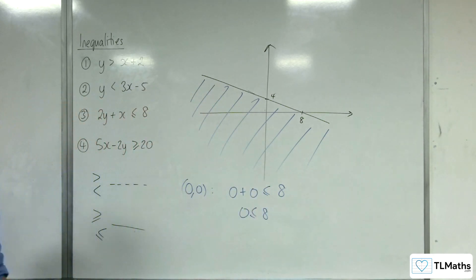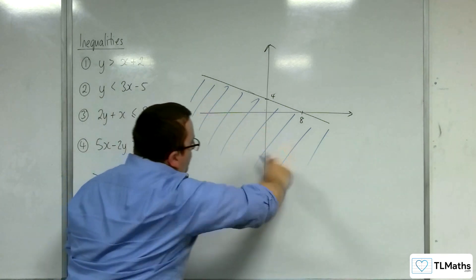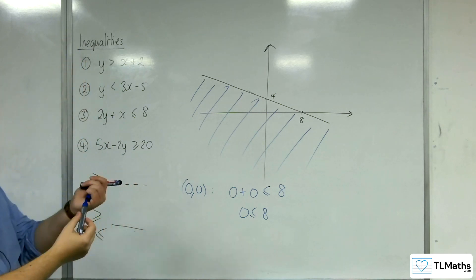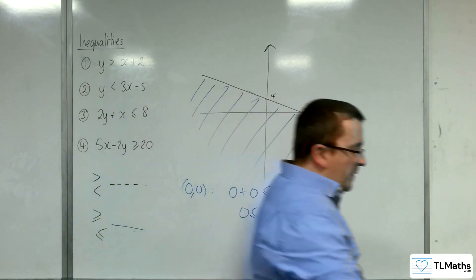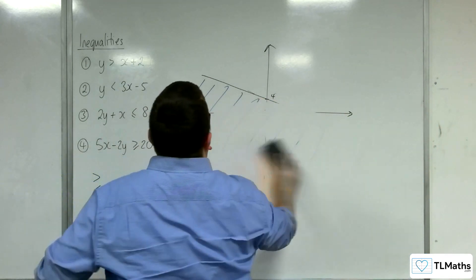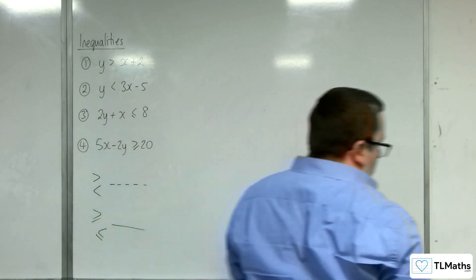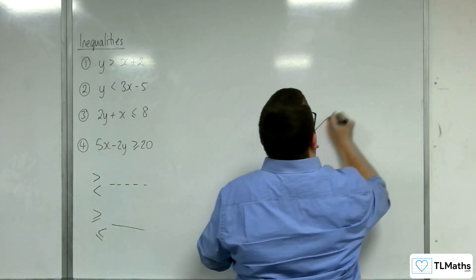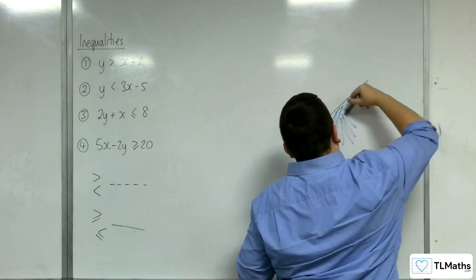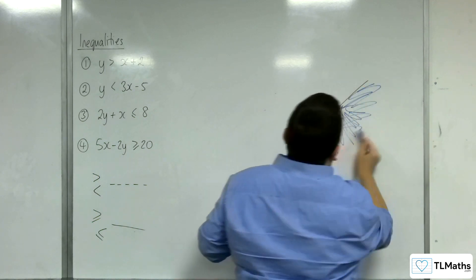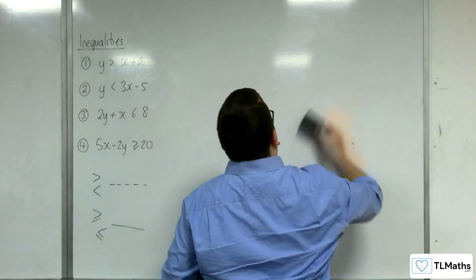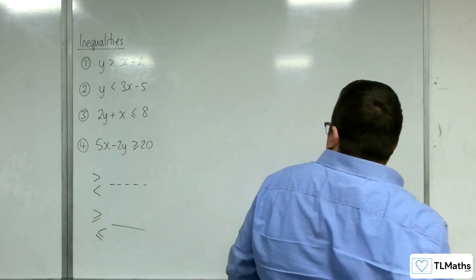So, notice how I'm not kind of like doing a big kind of scribble. I'm just using lengths of line just to kind of like identify the region clearly. Yeah, we definitely don't want a region identified like this. Right. Don't want that.